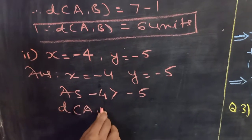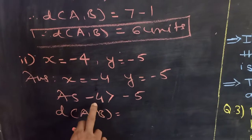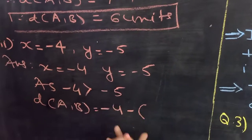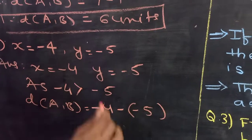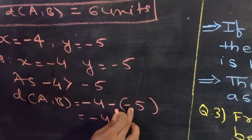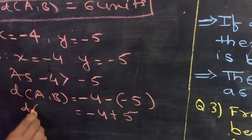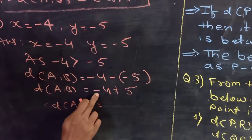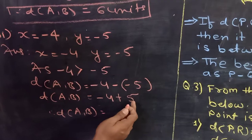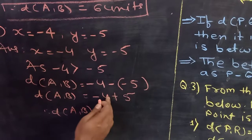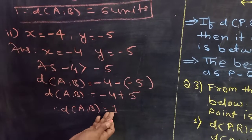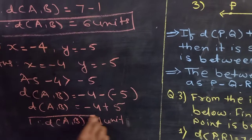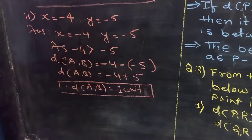So how will you find the distance between A and B? Larger coordinate minus smaller coordinate. Here your larger coordinate is minus 4, so minus 4 minus (in bracket) minus 5. Now minus and minus will become plus. So distance AB equals minus 4 plus 5. The sign of the greater number is minus, so the result is 1. If nothing is given in the question, write units. So distance AB is equal to 1 unit.